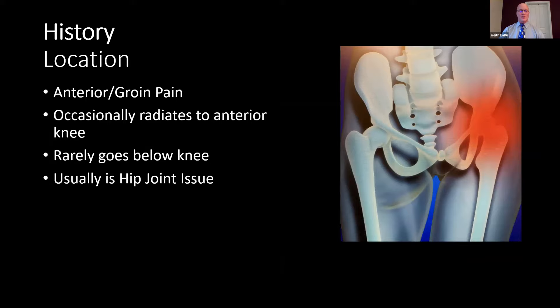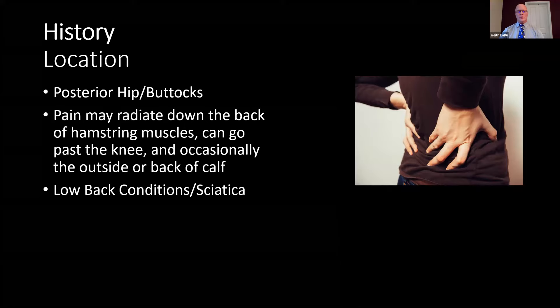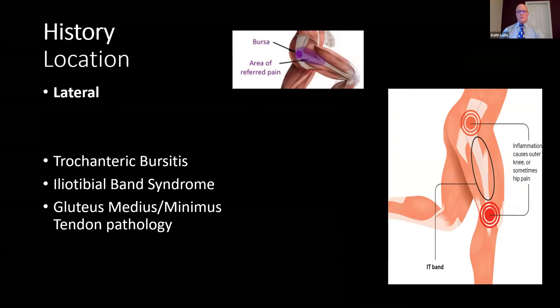The location of pain can help determine what's going on. Anterior and groin pain may occasionally radiate to the anterior knee but rarely goes below the knee — this is usually a hip joint issue. When the pain is more in the posterior aspect of the hip or buttocks region, and radiates down the back of the hamstrings past the knee into the calf or foot, you need to be more concerned about low back pain conditions and/or sciatica. Lateral hip pain should make you think about trochanteric bursitis, iliotibial band syndrome, and gluteus medius and minimus tendon pathology such as tendonitis or partial tears.